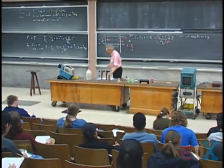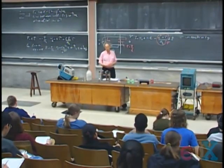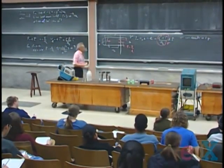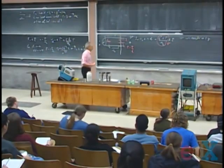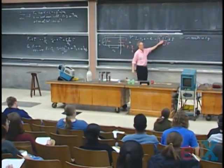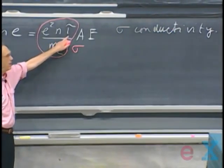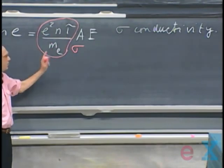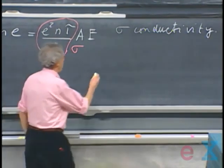If I calculate for copper the conductivity at room temperature, that's very easy. Because I've given you what N is on the blackboard there, ten to the twenty-nine. You know what tau is at room temperature, three times ten to the minus fourteen.